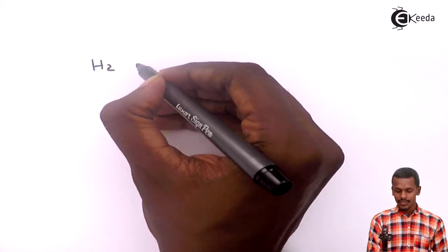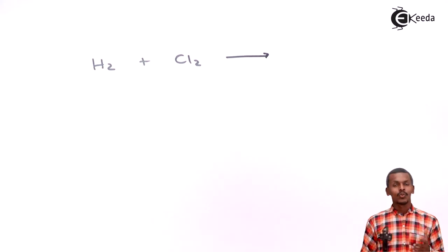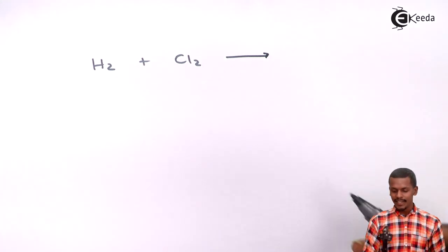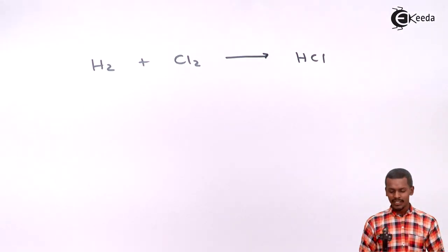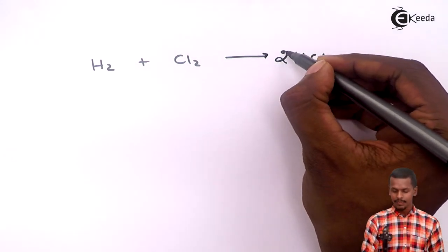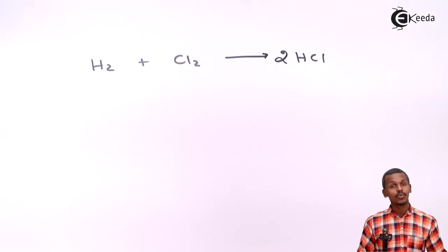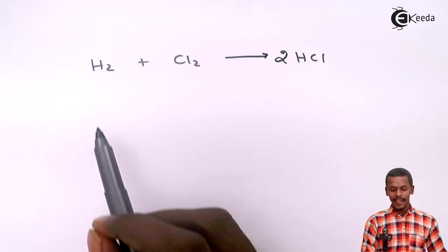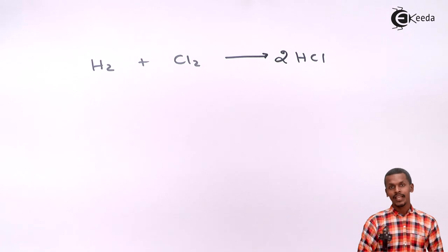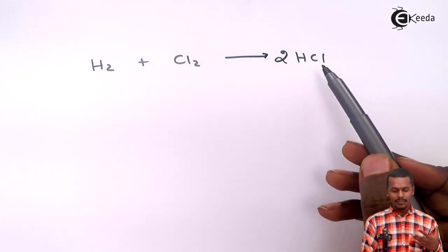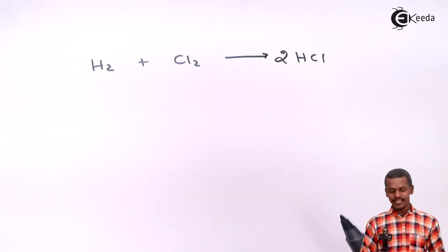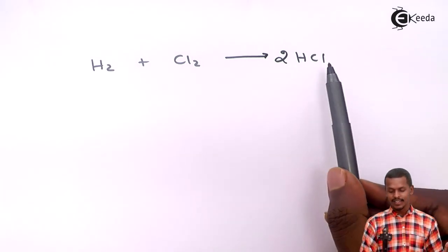For example, if we react hydrogen with chlorine, we obtain HCl. This reaction is not balanced, so we balance it by making the stoichiometry two times HCl: H₂ + Cl₂ → 2HCl. Here H₂ and Cl₂ are the reactants and HCl is the product, which is very different from the reactants.